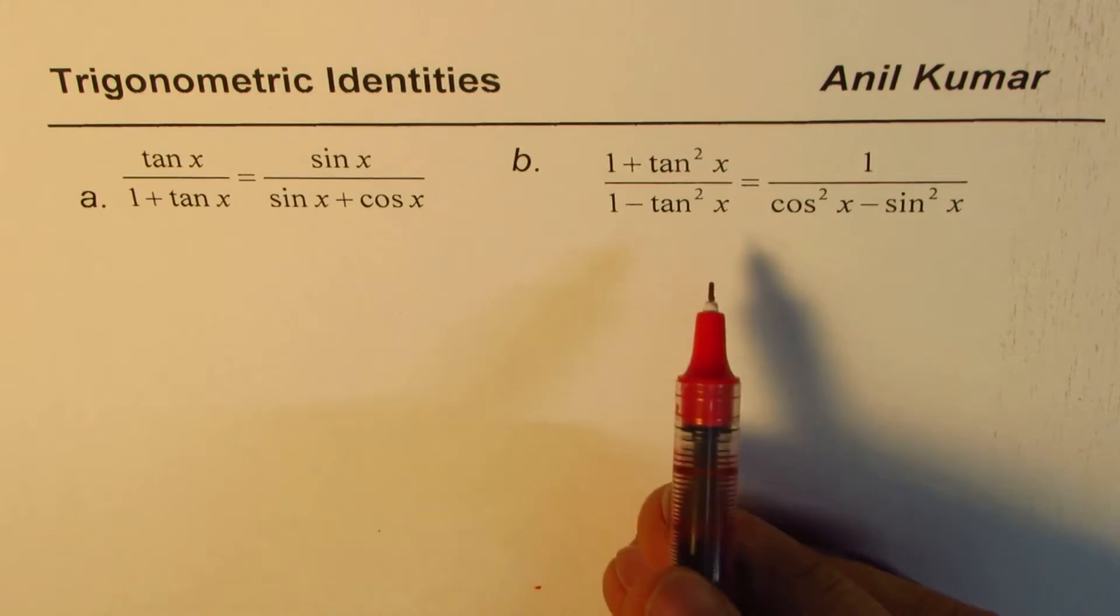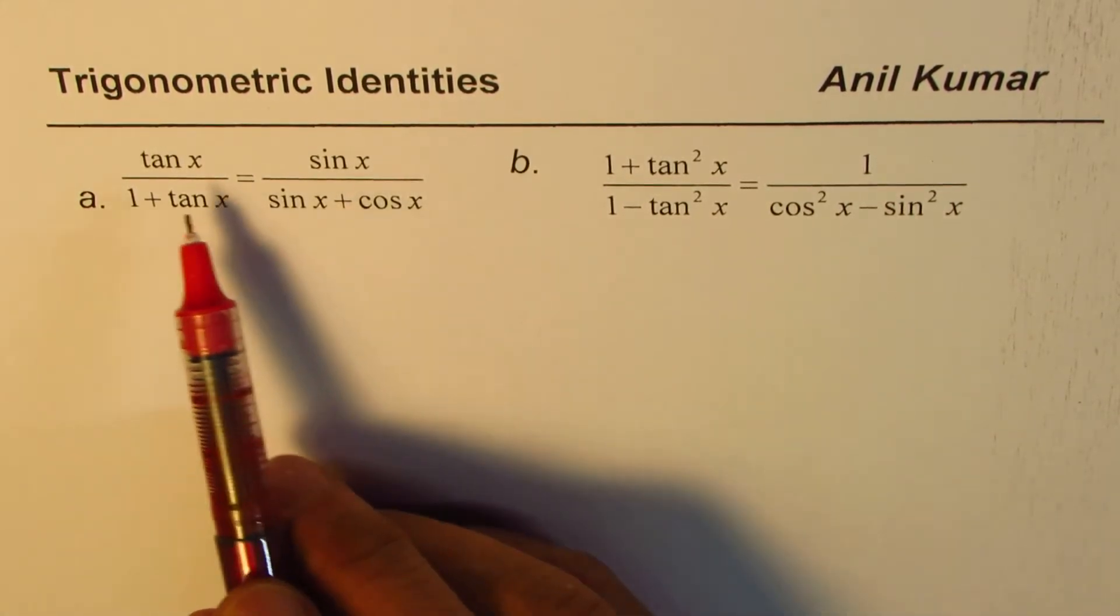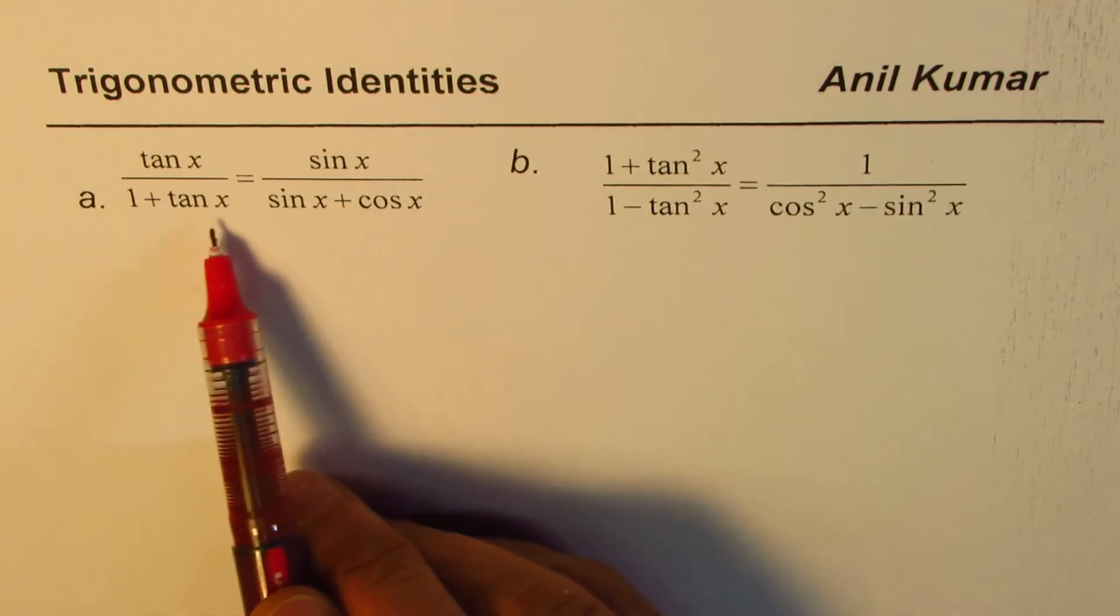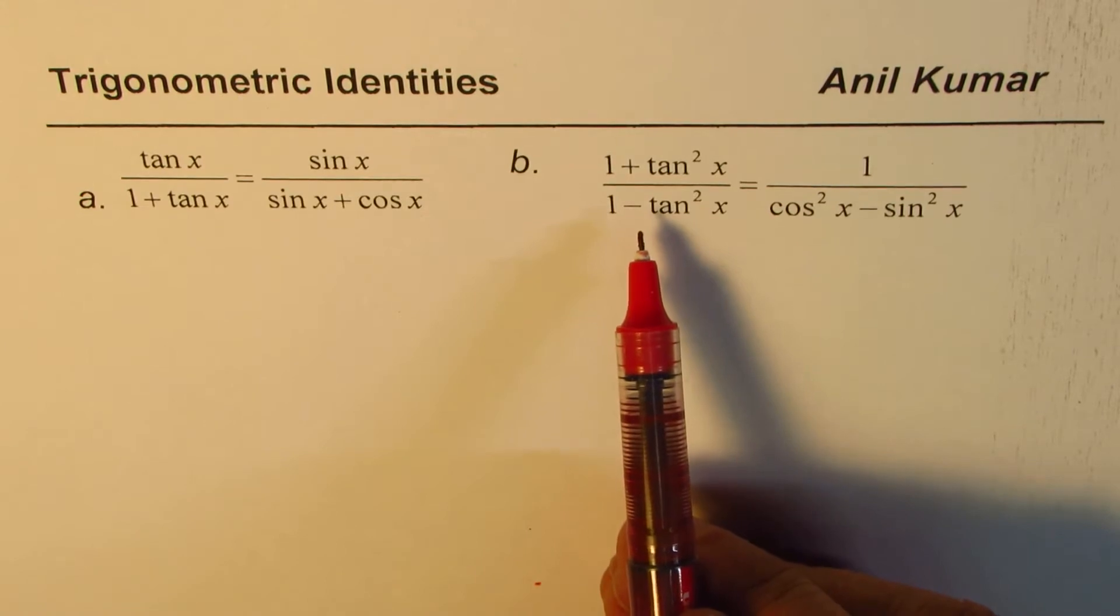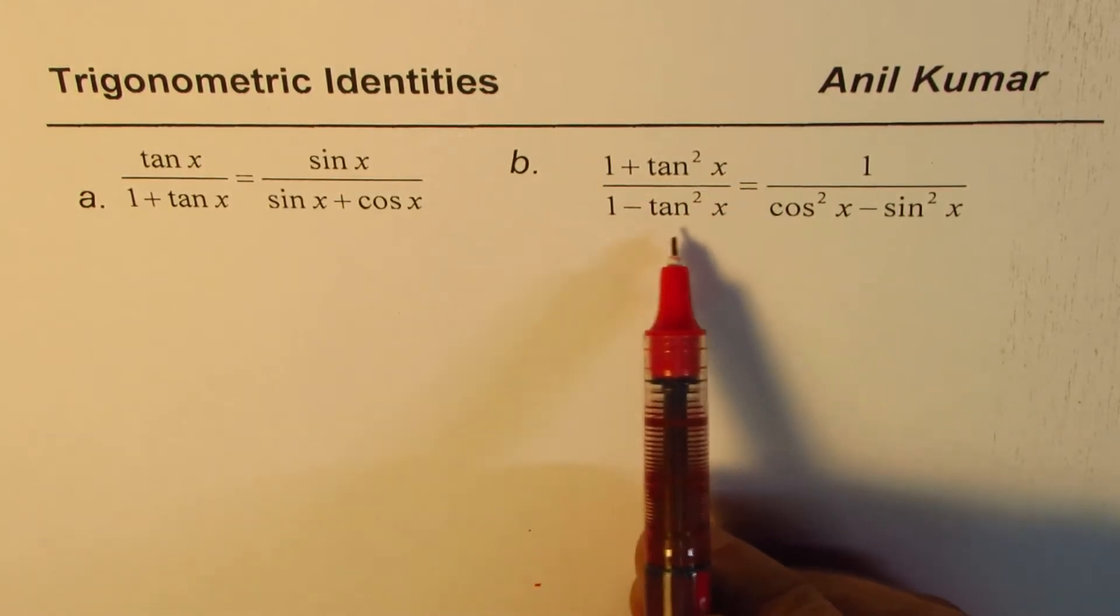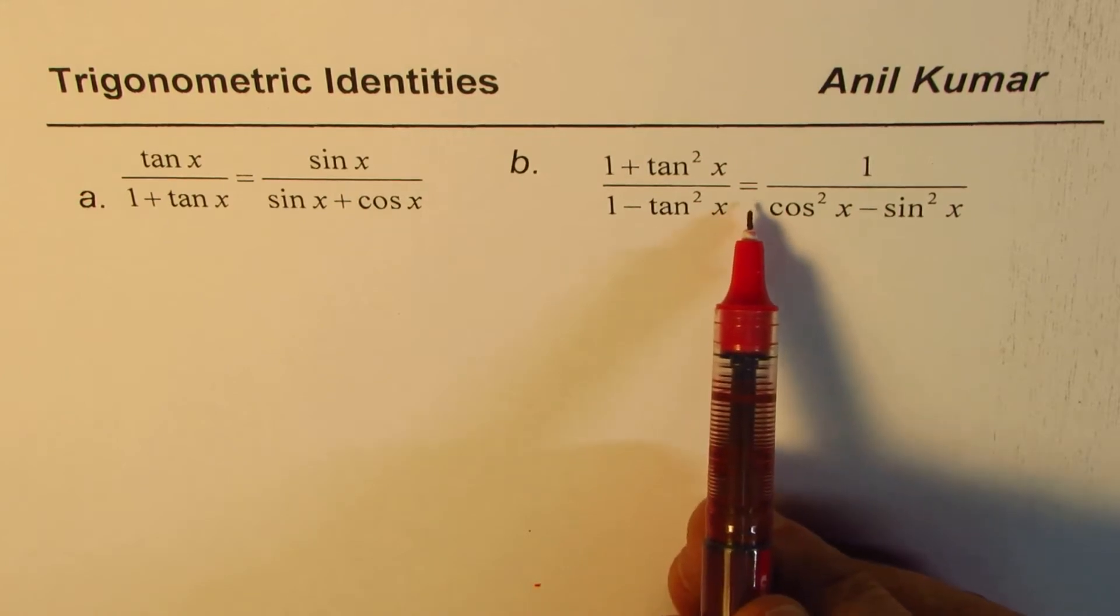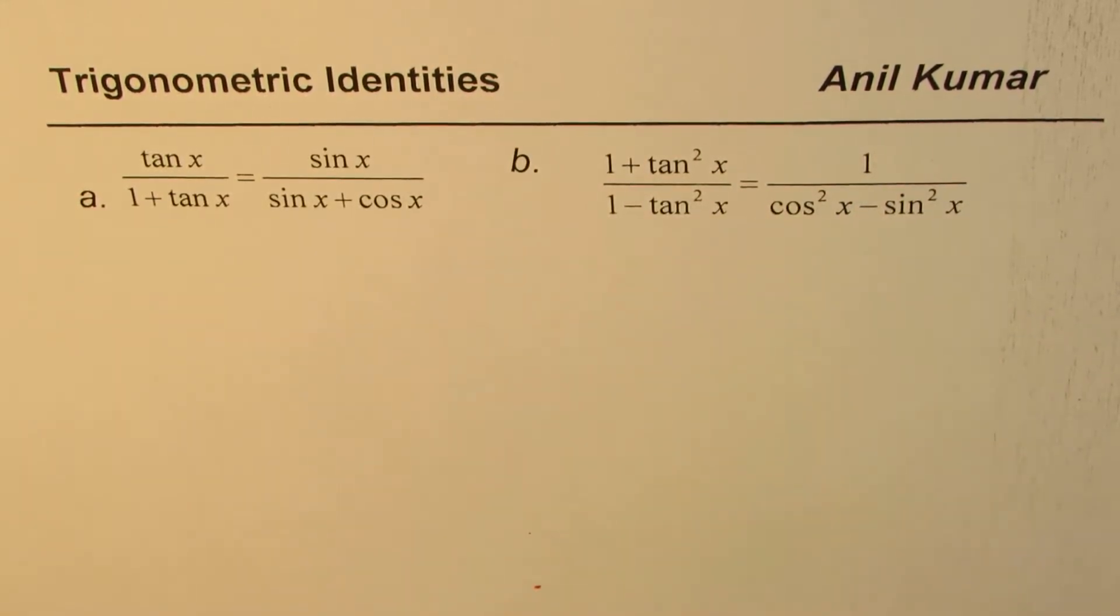We have two questions here. These two trigonometric identities are tan x over 1 plus tan x equals sin x over sin x plus cos x. And the other one is 1 plus tan square x divided by 1 minus tan square x equals 1 over cos square x minus sin square x.